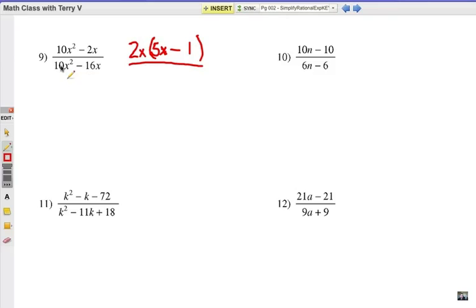On the bottom I can factor out 2 and x, which leaves 5x minus 8. The 2x cancels with itself. These are not the same binomial. I can't cancel out the 5x's because it's part of this whole binomial. So that should be my final answer right there.